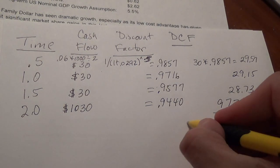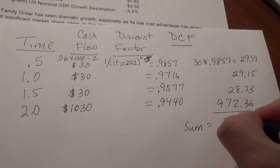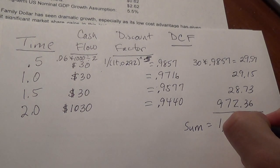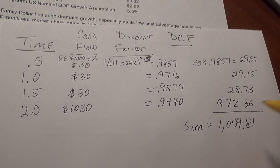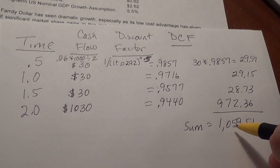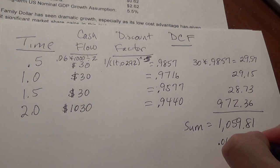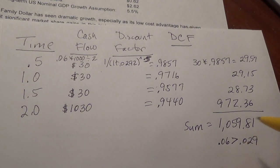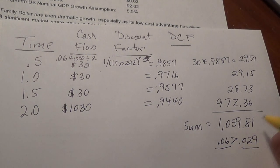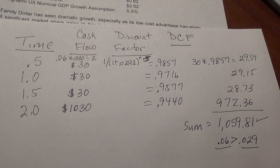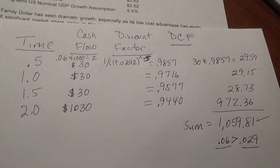When you take the sum of all the discounted cash flows, it equals $1,059.81. Notice that it's greater than $1,000, and that makes sense because our coupon of .06 is greater than our discount rate of .029. Any time the coupon is greater than the discount rate, we will get a price greater than $1,000. In the second video, I'll do the pricing for the stocks.